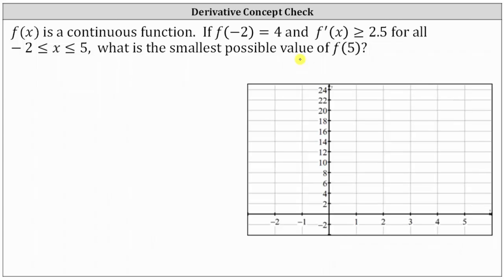Remember, the derivative function value indicates the instantaneous rate of change of f of x at a particular value of x. So if we're looking for the smallest possible value of f of 5, which is the right endpoint of this closed interval, this would occur if we have the smallest possible derivative function value over the interval.